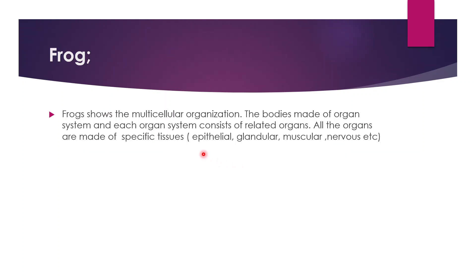The next topic is the frog. The frog is a multicellular organism. The body is made from different organs, and the organs are made from specific tissues: the epithelial, glandular, muscular and nervous tissues. The details are covered in practical work.